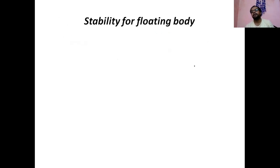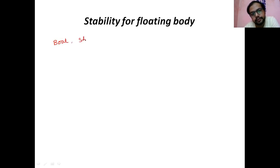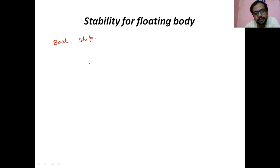Now we will see about the floating body. A body is floating over it — how the body looks like. It is a floating body. One example is a boat. This all are floating bodies. How it looks like — you see the cross-section of the body from the side.